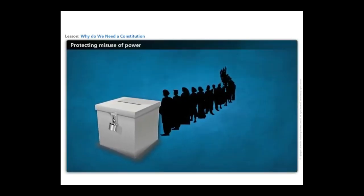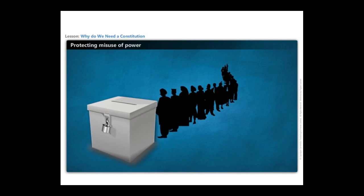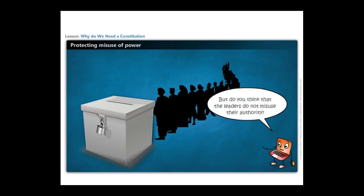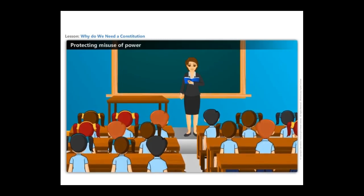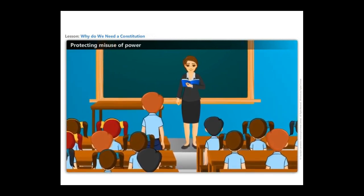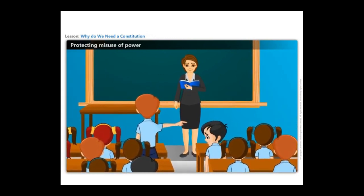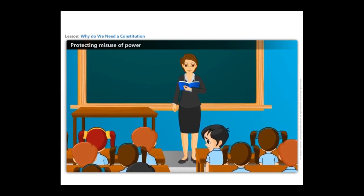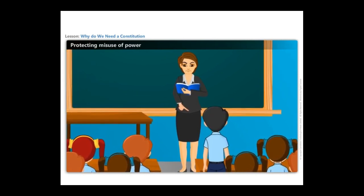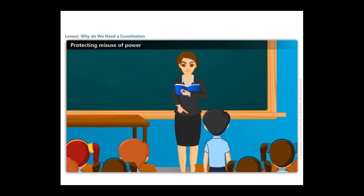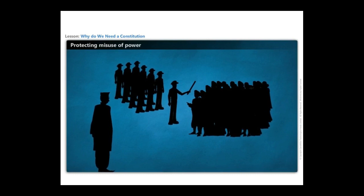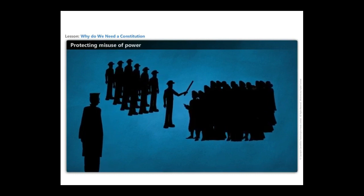In a democracy, we choose our leaders so that they can exercise power responsibly on our behalf. But do you think that the leaders do not misuse their authority? Rohan, the class monitor, does not have a good relation with his classmate Arun. Rohan always puts false complaints of making noise against Arun to the teachers. As the responsibility of minding the class is vested upon the class monitor Rohan, Arun is often punished by teachers for no reason. Similarly, there is always the possibility that the leaders in a political system might misuse their authority.